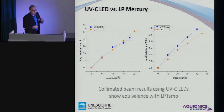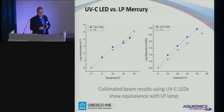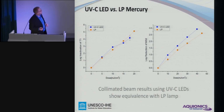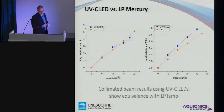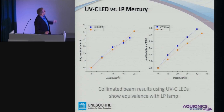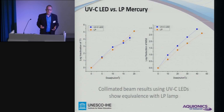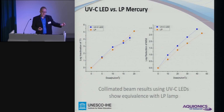Some work was done comparing the effectiveness of UV light emitted by LEDs versus low-pressure mercury-based lamps. The left graph shows inactivation of T1, the right one MS2 — surrogate organisms used in validation of UV disinfection systems. Based on a delivered dose on the horizontal axis, it results in a certain log inactivation, and the collimated beam results show that they are both equivalent. Technically, it doesn't matter to the bug if it's killed by photons emitted by an LED or by a mercury-based lamp.